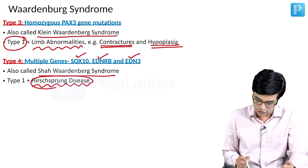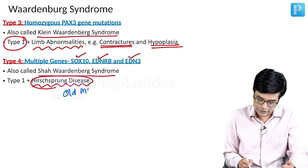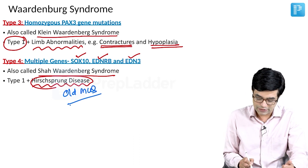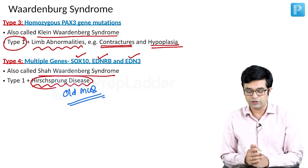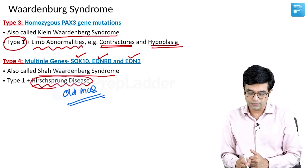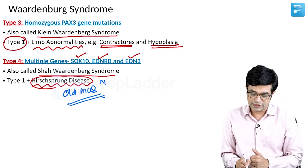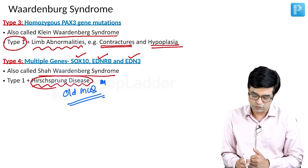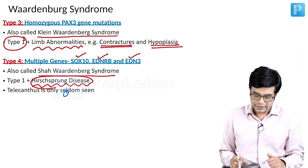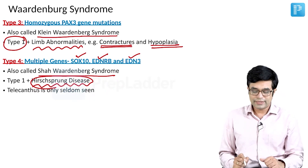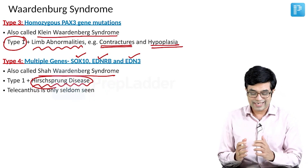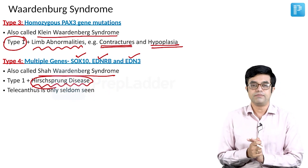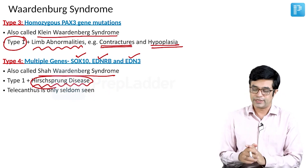This is an important MCQ point: Hirschsprung's disease is present in the Type 4 variety of Waardenburg syndrome. Also remember, telecanthus is only seldom seen in Type 4.